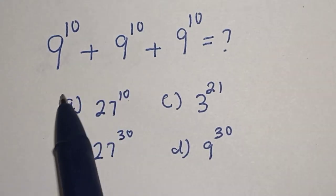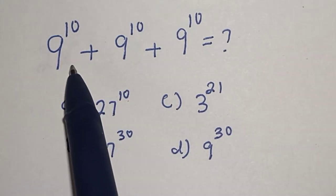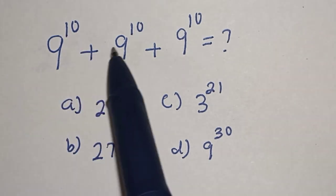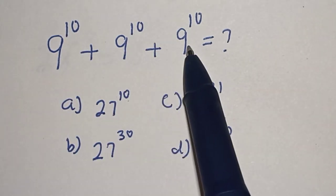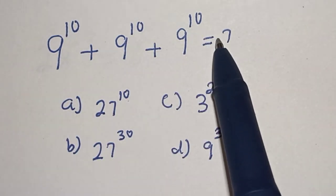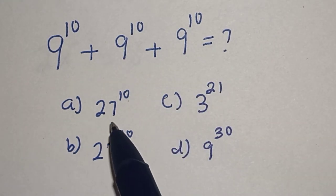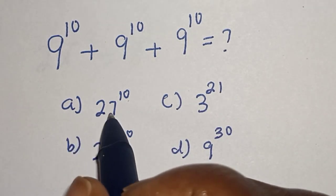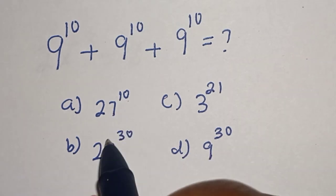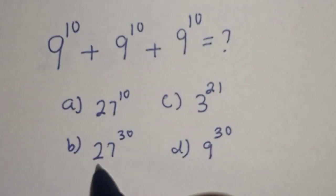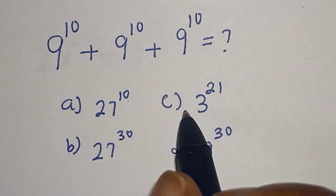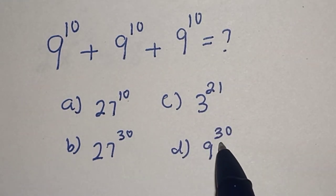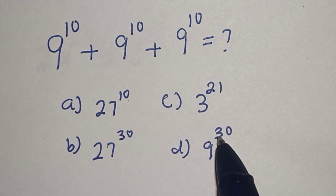Hello, welcome to Magis. In this class we want to evaluate this math problem: 9 to the power of 10 plus 9 to the power of 10 plus 9 to the power of 10 is equal to what? Here are the options: A is equal to 27 raised to power 10, B is equal to 27 raised to power 30, C is equal to 3 raised to power 21, D is equal to 9 raised to power 30.